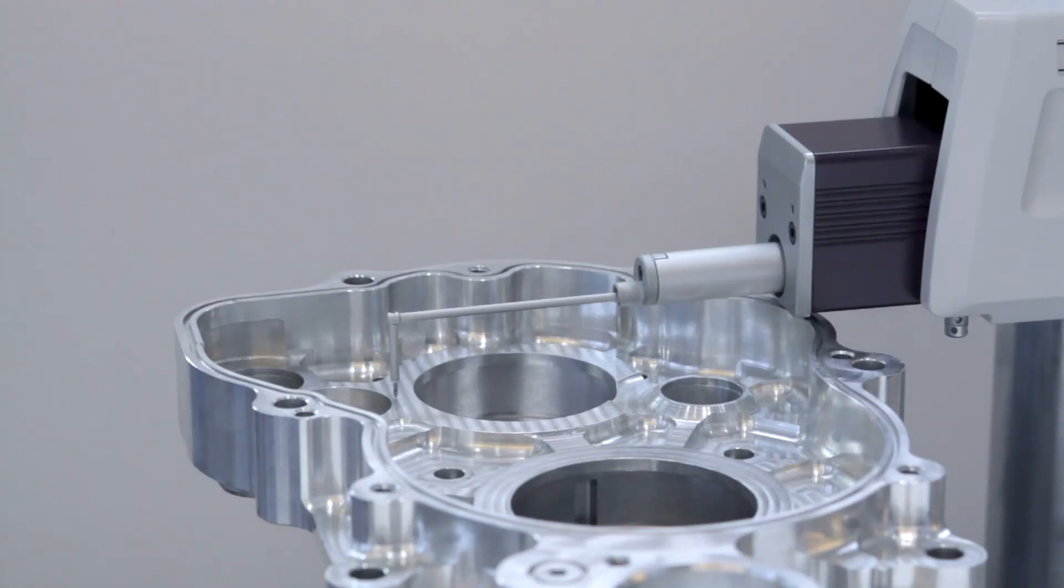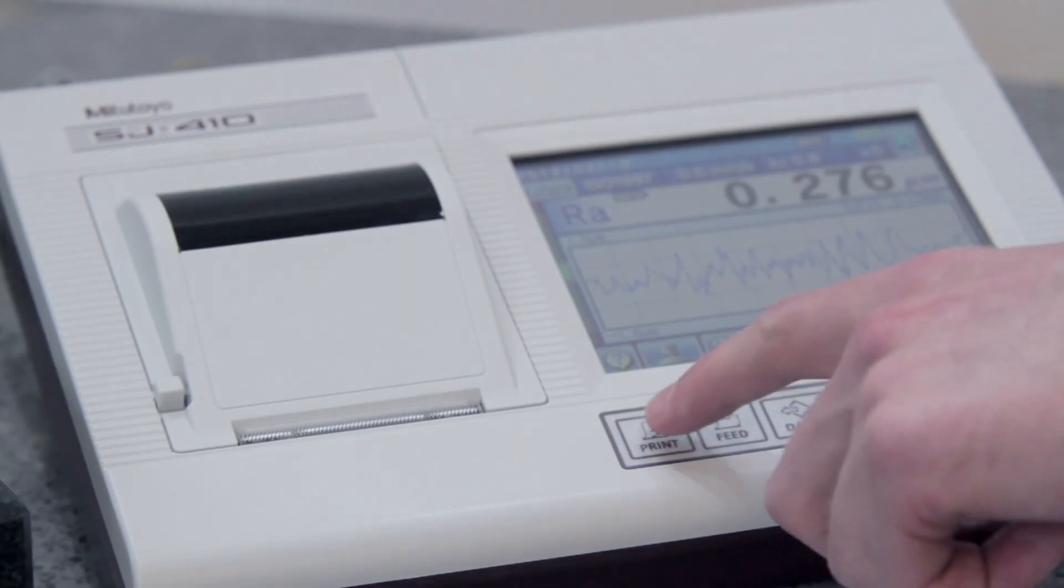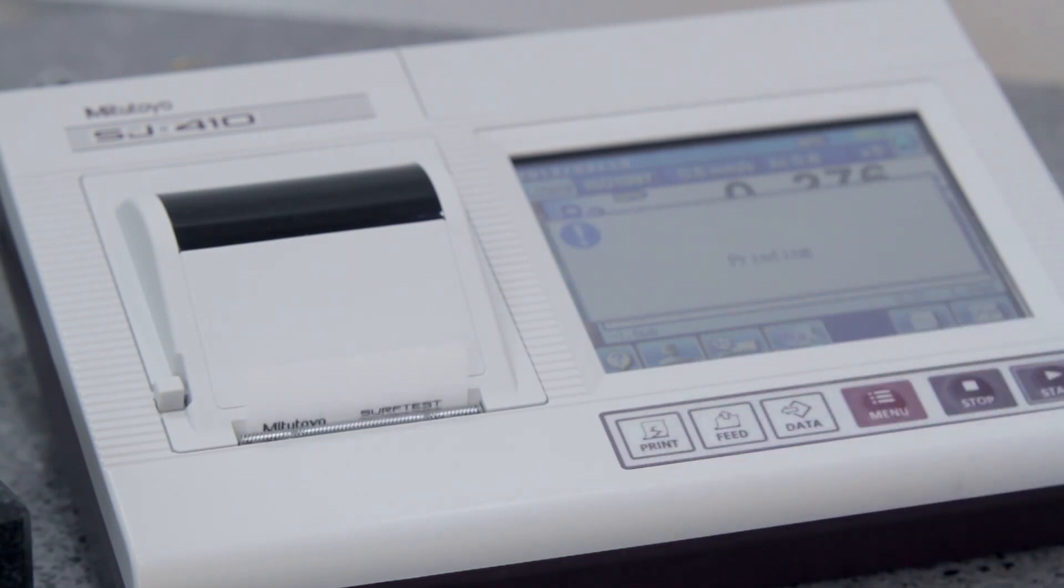The SJ410 can export measurement data direct to a PC running Measulink or print out results by the high-speed built-in printer.